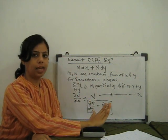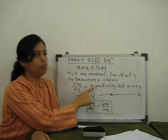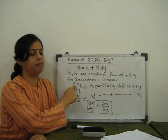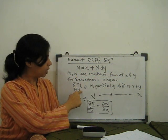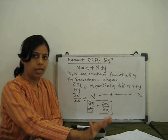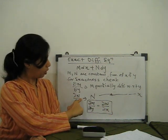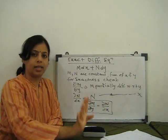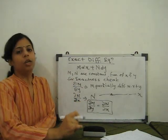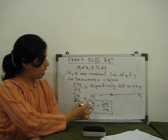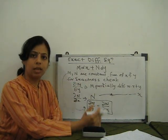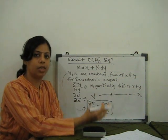For the exactness of this equation, we have to check using partial differentiation — which you learned in previous classes. We find the partial derivative of M with respect to y, treating x as constant. Similarly, N is partially differentiated with respect to x, treating y as constant. The condition for exactness is: del M upon del y equals del N upon del x. If both terms are equal, the given equation is exact.